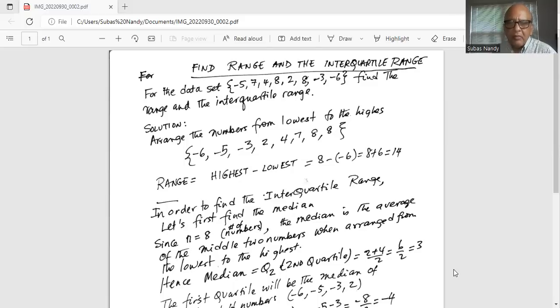First we'll arrange the numbers from lowest to the highest. So -6 is the lowest, followed by -5, then -3, then 2, 4, 7, and there are two 8's.